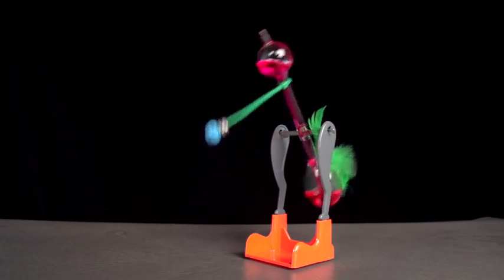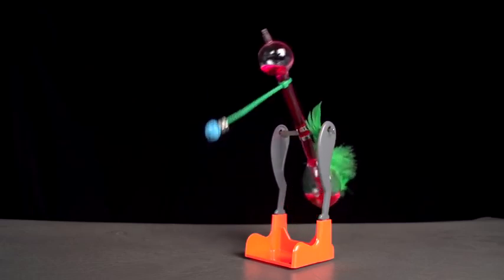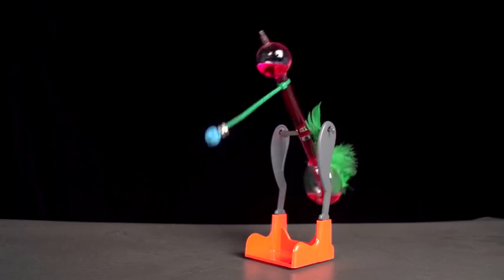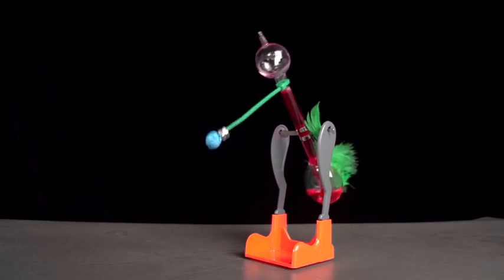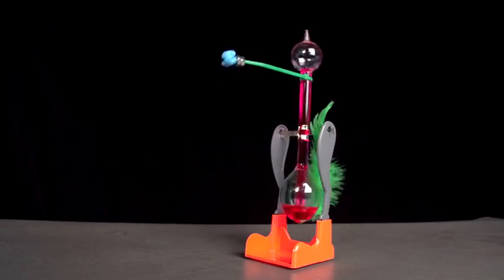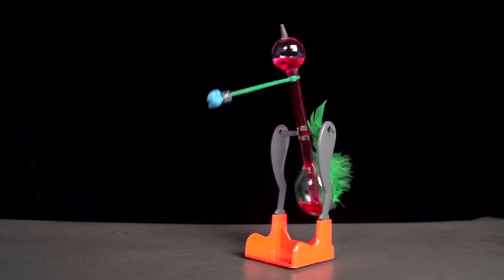There, it drinks. It becomes upright, and the liquid drains from the head. Liquid rises again to the head and the bird drinks again. This cycle repeats until all of the isopropyl alcohol on the bird's head evaporates.